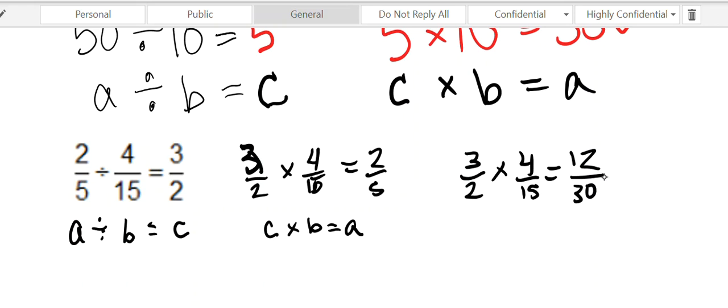2 times 15 is 30. The top and bottom can both be divided by 6, as long as we divide the top and the bottom by the same thing. We can simplify: 12 divided by 6 is 2, 30 divided by 6 is 5. So yes, we did get back to 2 fifths by taking 3 over 2 and multiplying by 4 fifteenths.